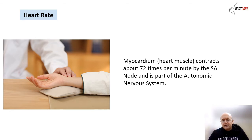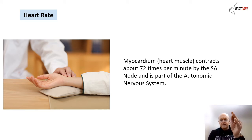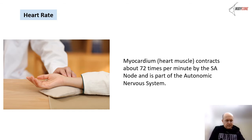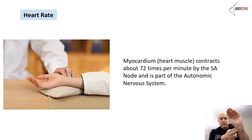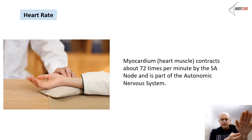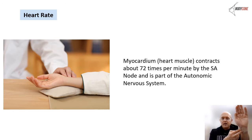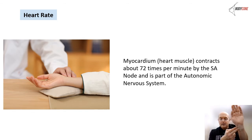The heart rate is controlled by the SA node and is part of the autonomic nervous system. To take a pulse at the wrist (brachial pulse), place your fingers just down from the thumb — don't use your thumb as it has its own pulse. Take it for 30 seconds and multiply by 2, or 10 seconds and multiply by 6, to get beats per minute.